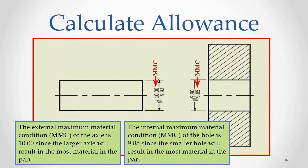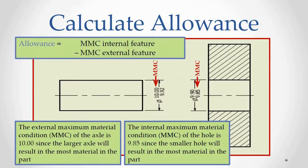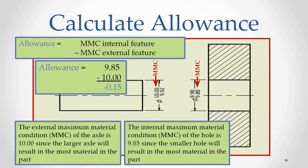This example shows an interference fit, in which the MMC of the hole, the smallest allowable dimension, is 9.85 millimeters, and the MMC of the peg, the maximum allowable dimension, is 10.00 millimeters. When the MMC of the peg, the external feature, is subtracted from the MMC of the hole, the internal feature, the result is a negative value. We treat allowance as an absolute value, so the allowance, or maximum interference between these parts, is 0.15 millimeters.